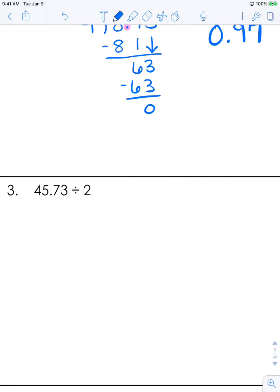This next example: 45.73 divided by 2. Because I know my division rules, I know this is not going to go in perfectly because the last digit is 3, and 3 is not divisible by 2. This gives you a hint that we're probably going to have to add some zeros onto the end there.